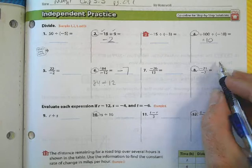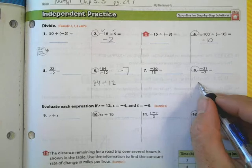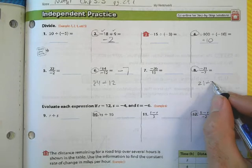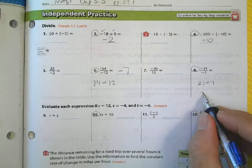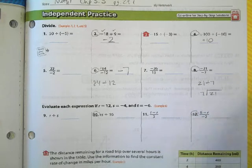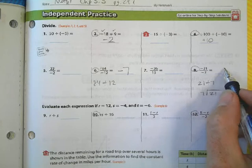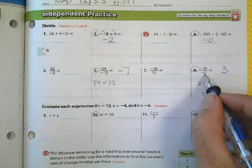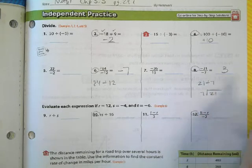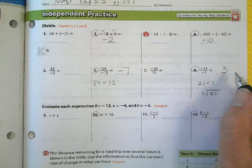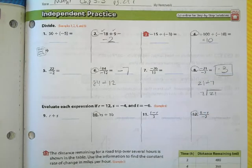On number 8, I have negative 21 divided by negative 7. 21 divided by 7 is really a basic math fact - it's 3, because 7 times 3 gives me 21. And because they're both negative, I end up with a positive answer, positive 3.